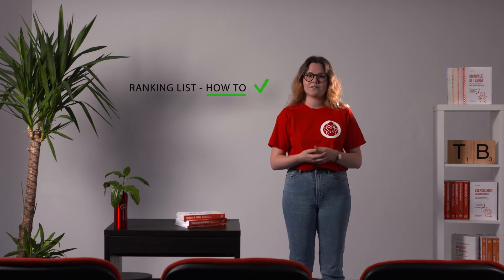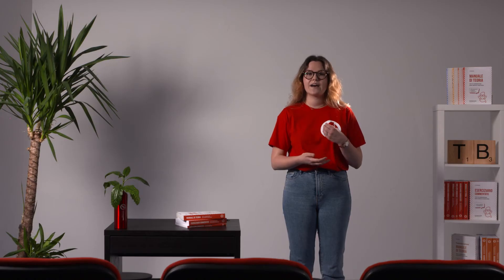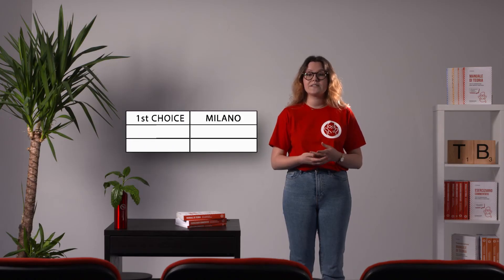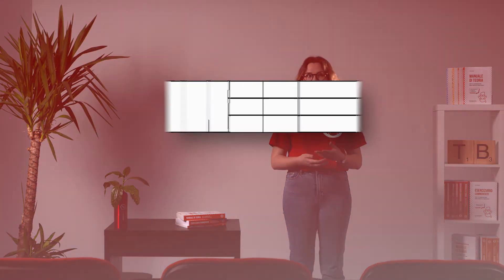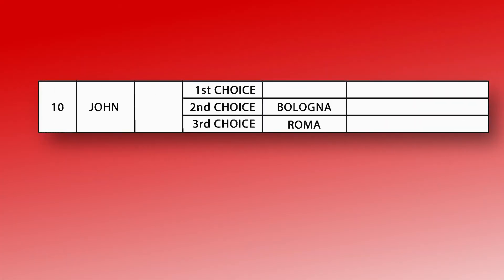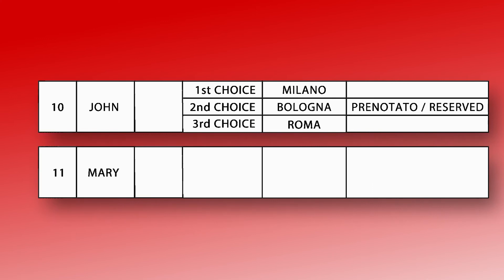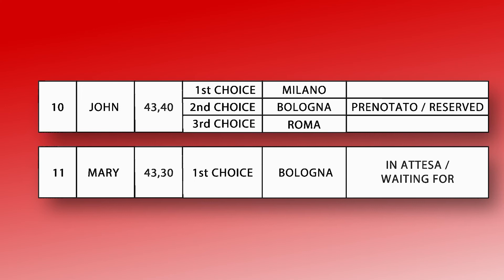The second example will allow us to better understand the rationale behind the ranking. As said before, John wants to study in Milan and he puts it as his first choice. The other ones are Bologna and Rome. Unfortunately, John doesn't score high enough for Milan, and when the ranking comes out, he is reserved for Bologna. A second imaginary candidate, Mary, chose Bologna as her first choice, but she scored lower than John. Regardless of the fact that Bologna is Mary's first choice, John has the priority for Bologna because he scored higher.